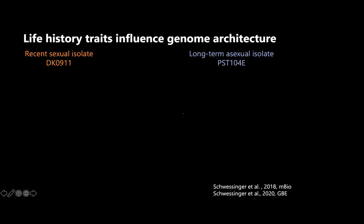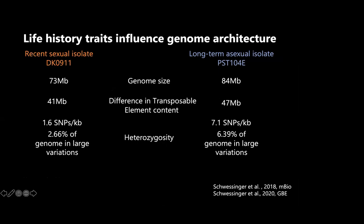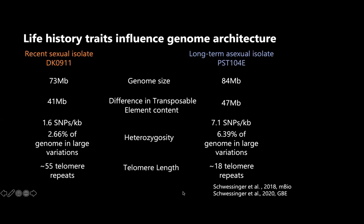By comparing these two genomes we asked: what is the effect of long-term asexual reproduction versus sexual reproduction on the genome? Throughout the next slides, the recently sexual isolate is shown in brown and the long-term asexual lineage — traceable back to the 1950s in Europe — is in blue. The first finding is that the long-term asexual isolate has an expanded genome, partially caused by transposable elements. We also measured SNPs, structural variants, and found that the asexual isolate shows what appears to be telomere shortening over time — similar to what's observed in mammals.